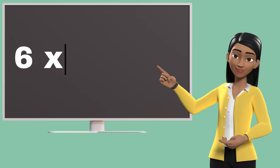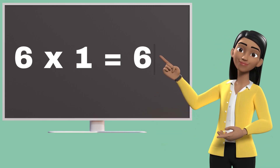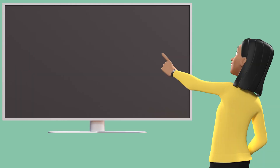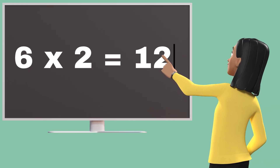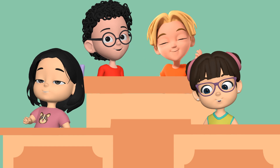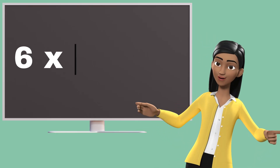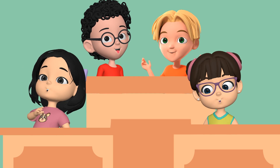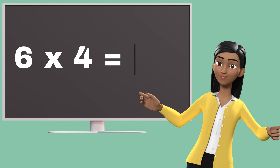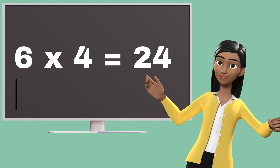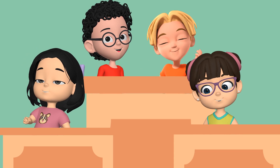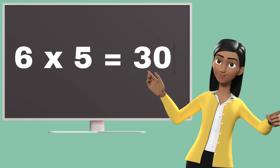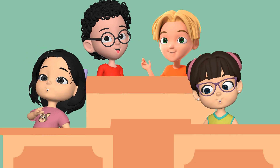Six ones are six. Six twos are twelve. Six threes are eighteen. Six fours are twenty-four. Six fives are thirty.